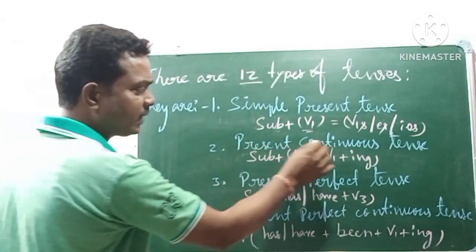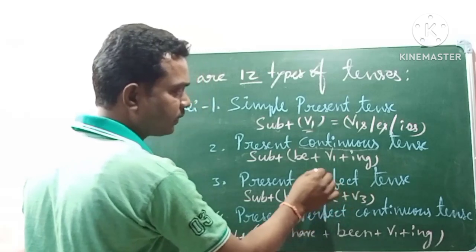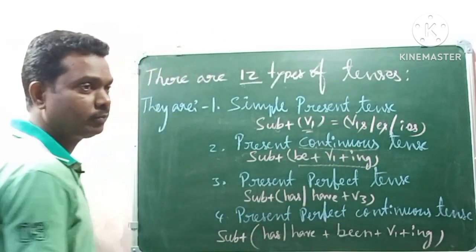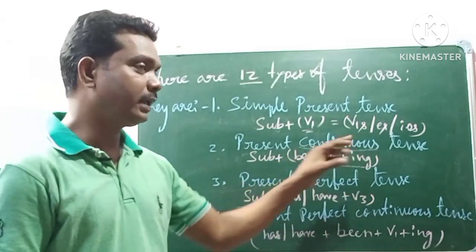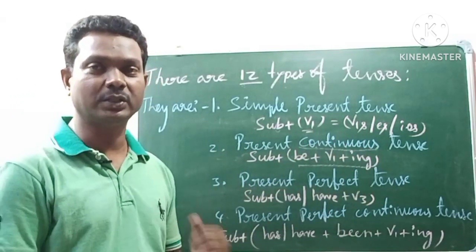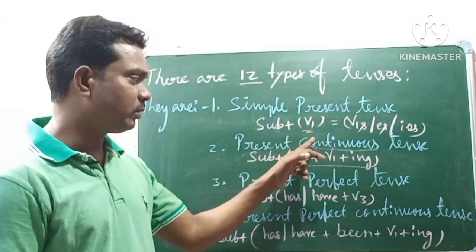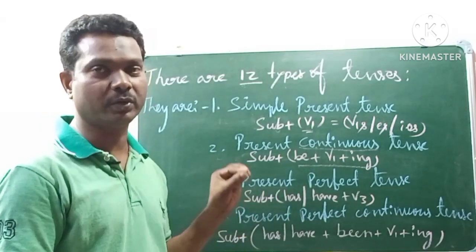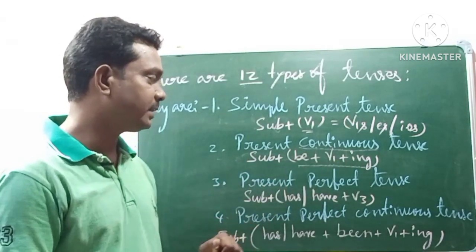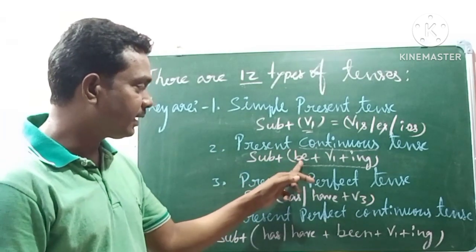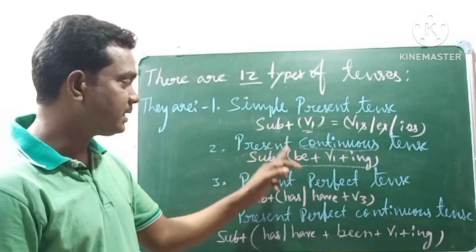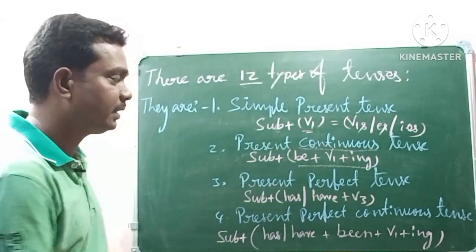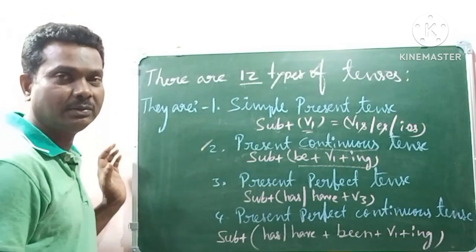For present continuous tense, it is compulsory to use a B-form verb plus V1 plus 'ing'. The B-form verb in present tense is am, is, are. So the structure is: subject plus am/is/are plus V1+ing. That is present continuous tense.